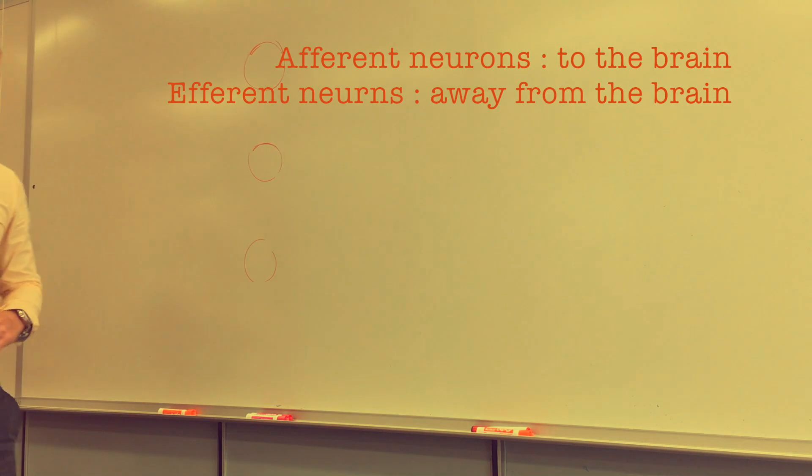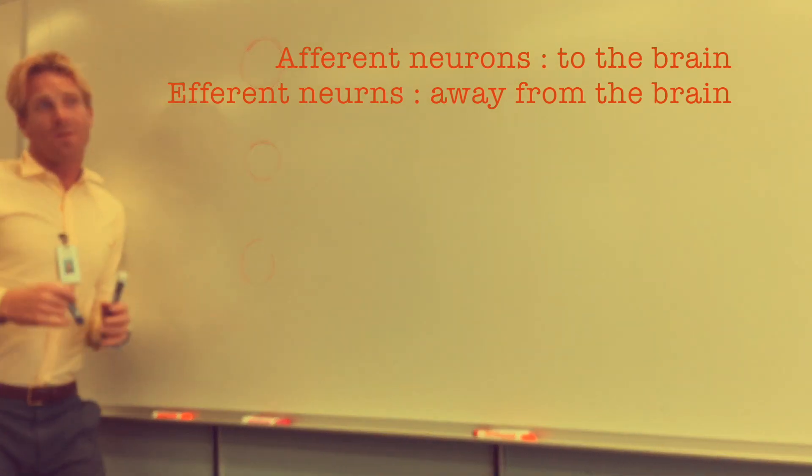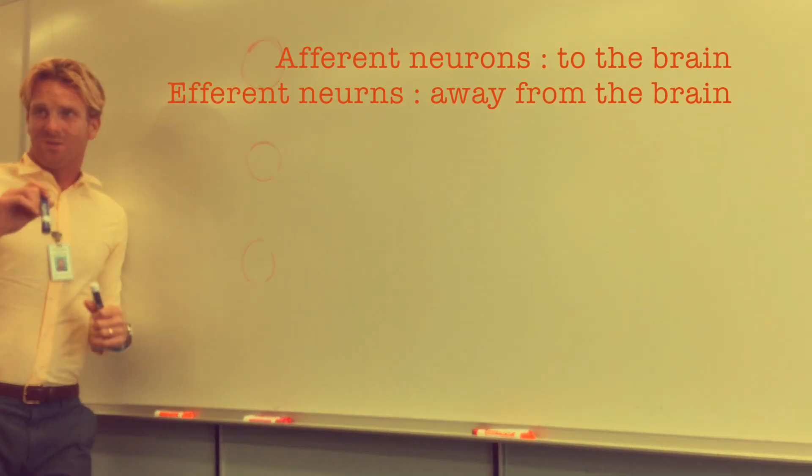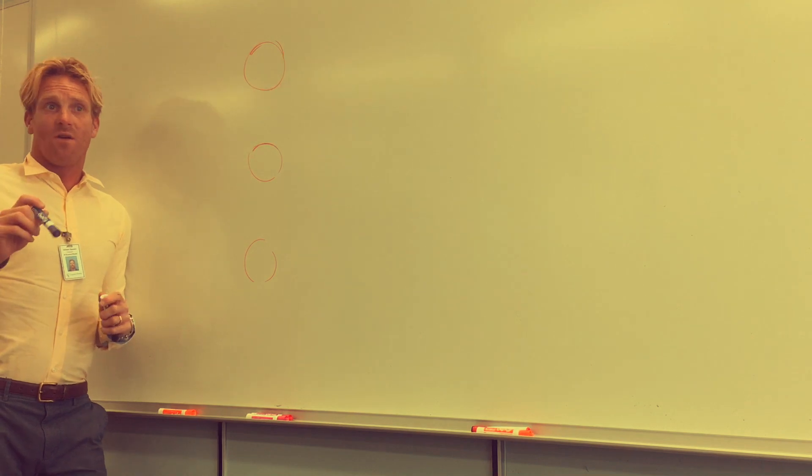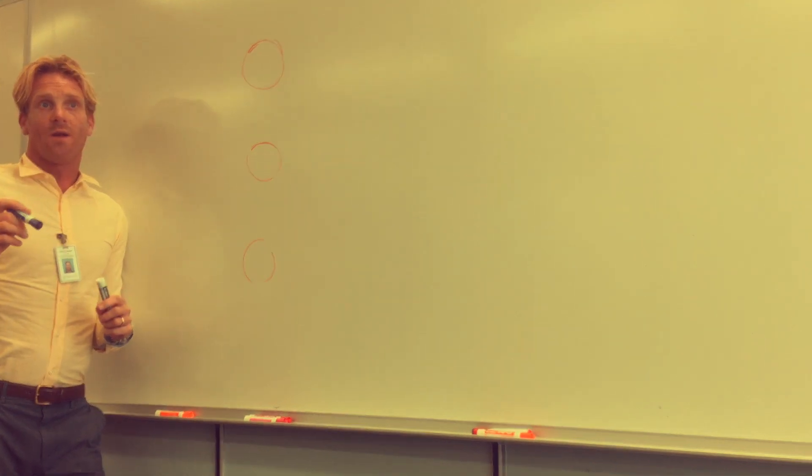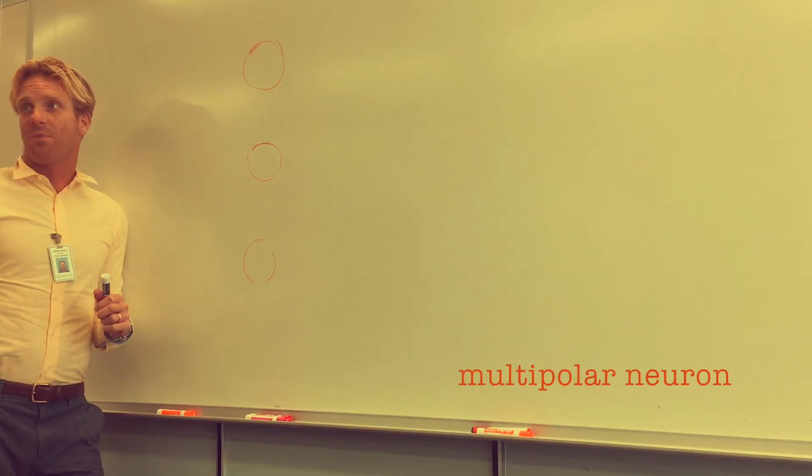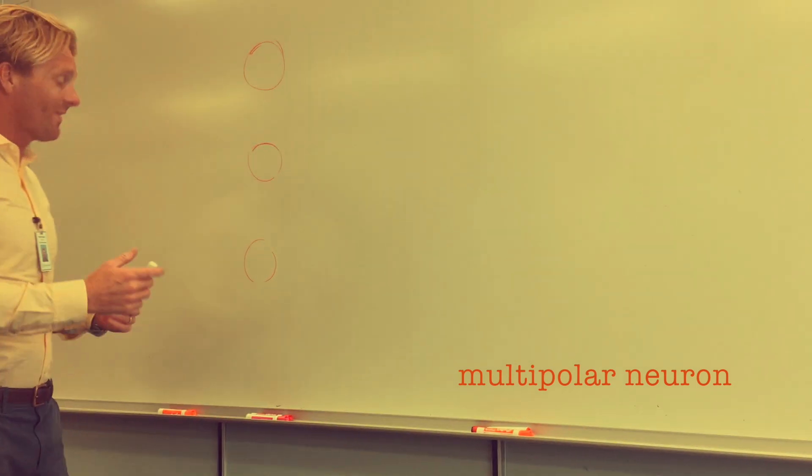Now among those two categories, you're going to come across a couple of different shapes of neurons. The most common type of neuron is a multipolar neuron, and this is the same one that we used as an example in class.